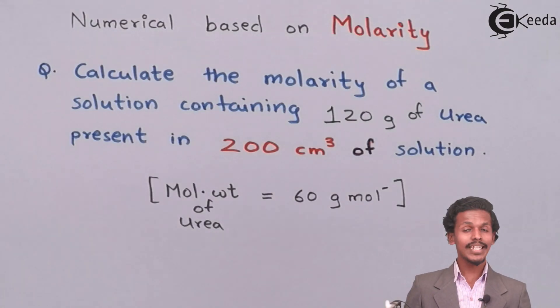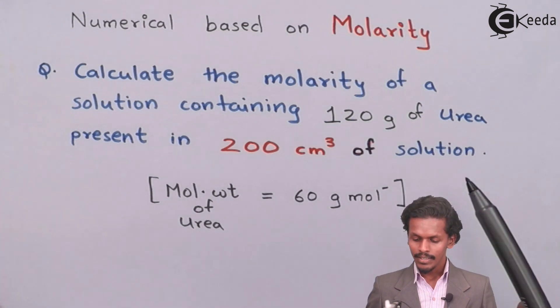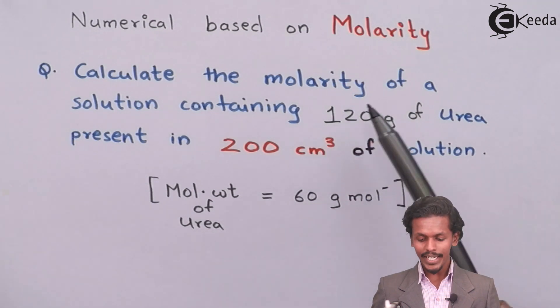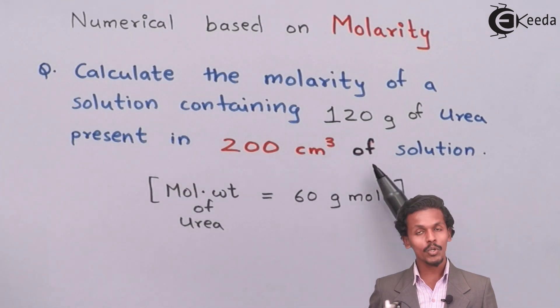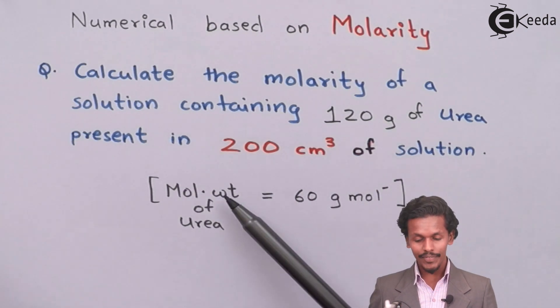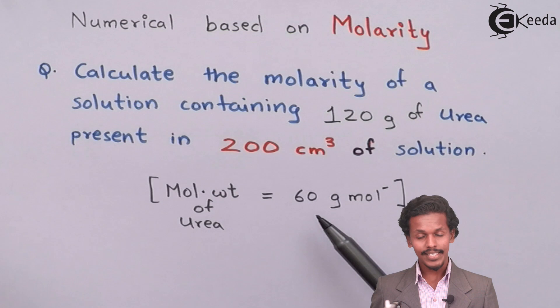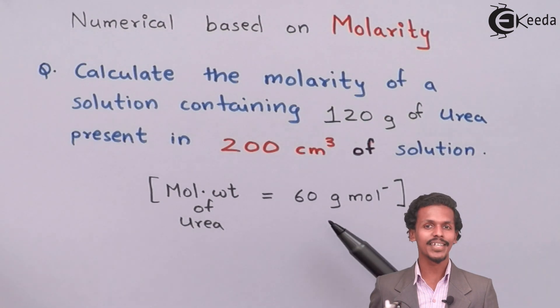In your screen you can see a question based on calculating molarity. We have to calculate the molarity of a solution which contains 120 grams of urea present in 200 cm³ of solution, and the molecular weight of urea is given as 60 grams per mole. So let us calculate the molarity.